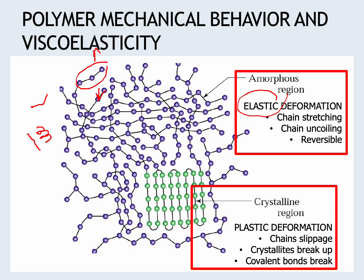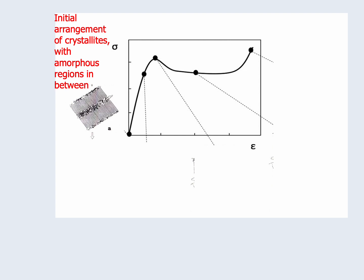For plastic response to occur, the secondary bonds between chains have to actually break — the chains slip past one another, and the crystalline regions start to break up into smaller pieces. Eventually, if stress continues, covalent bonds will break, but that takes a lot of stress. The stress-strain curve for polymers has a different shape than metals: stress increases to a point, then decreases — and that's where the neck occurs in the polymer, just as it does in a metal.